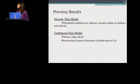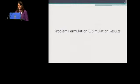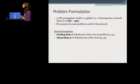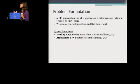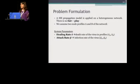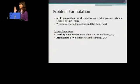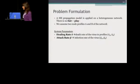These are the prior results that we base our work on, in both discrete and continuous time. Our model is in continuous time. The SIS propagation model was applied on a network where there is no fair play — we are not all the same against the virus. We assume two profiles, A and B, though we could have many. The system parameters are the healing rate delta, which is the death rate of the virus, and the attack rate B, which is the infection rate of the virus.